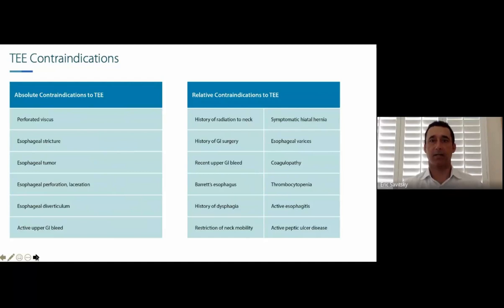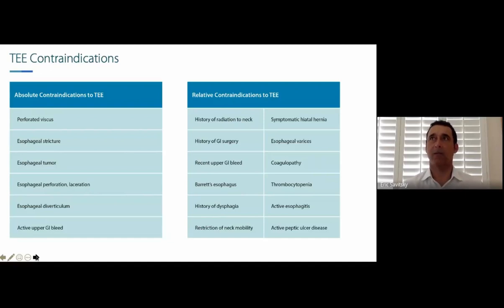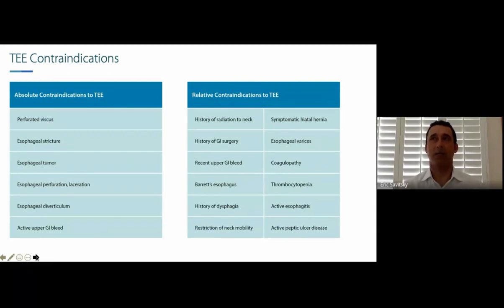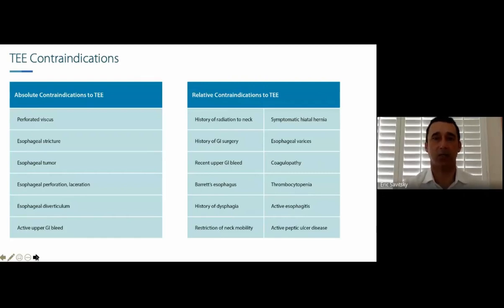In terms of candidacy for TEE, there are absolute and relative contraindications. Absolute contraindications include perforated viscus, esophageal strictures, esophageal tumors, history of perforation or laceration, esophageal diverticula, or active upper GI bleed. With resuscitative TEE, many contraindications are unknown because patients are in cardiac arrest and cannot provide history. If you're aware of absolute contraindications, they remain relevant. For patients who are potentially dying without heroic measures, many relative contraindications effectively go away.